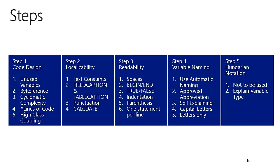In this video we will go through five steps. In step one we will talk about code design. In step two, localizability. Step three is about reliability. Step four is about variable naming, and in step five we will briefly touch on Hungarian notation.